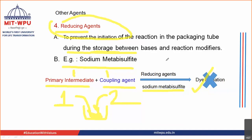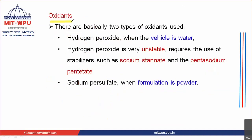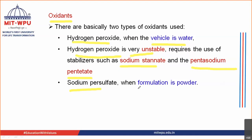Hydrogen peroxide is basically used when the vehicle is water. Hydrogen peroxide is very unstable, and hence whenever using it to cause oxidation of your primary intermediates, stabilizers such as sodium tannate and pentasodium pentetate are basically used as stabilizing agents because hydrogen peroxide is very unstable in nature. Sodium persulfate can also be used as an oxidant instead of hydrogen peroxide when the formulation is in the form of powders.